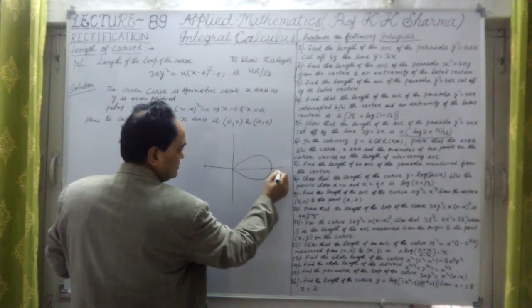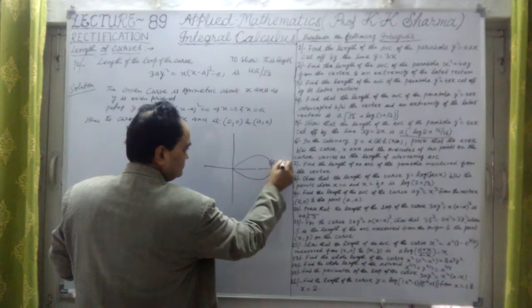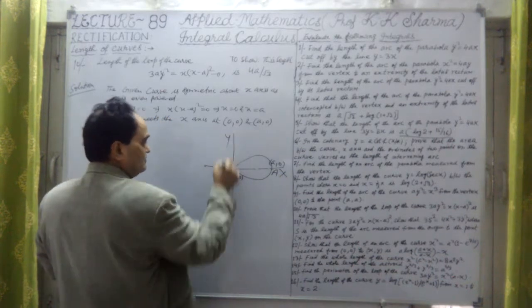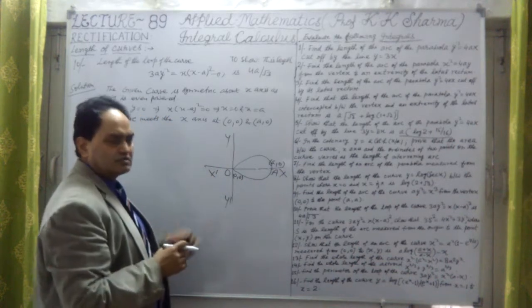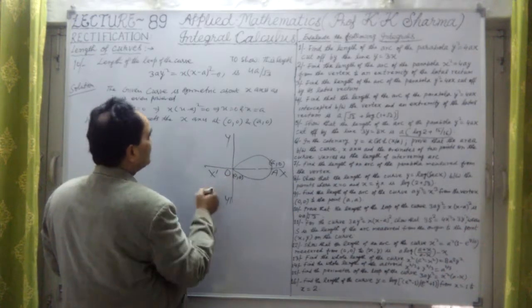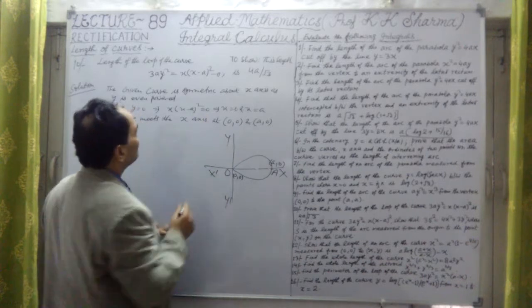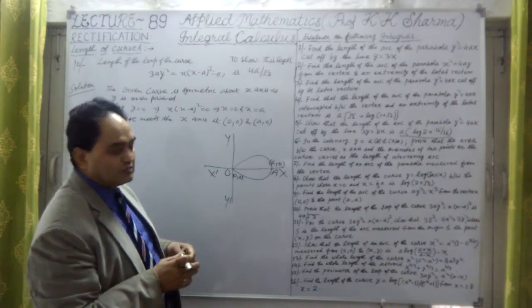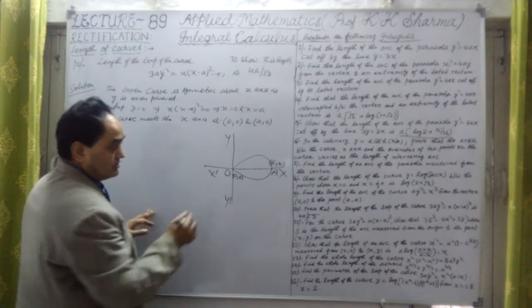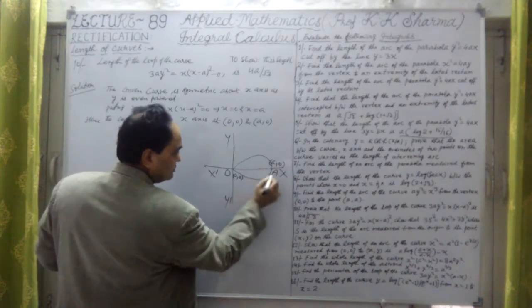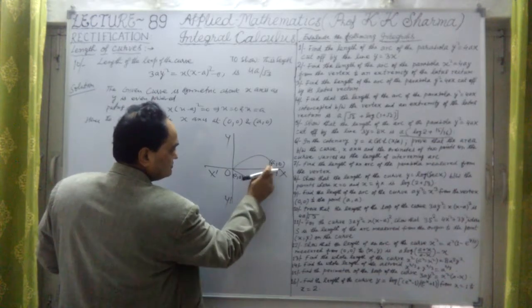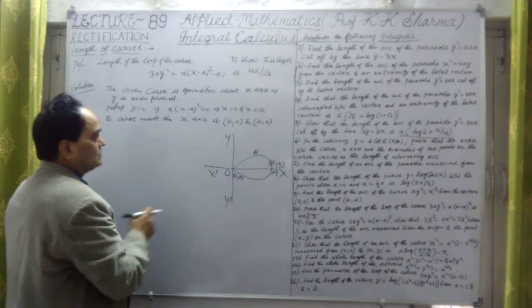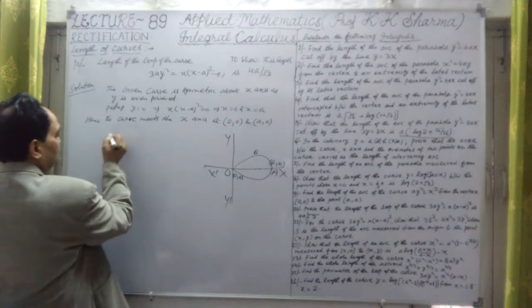The curve passes through the origin and (a,0) on the x-axis, forming a loop. The total length of this loop equals twice the arc length from O to B, since the curve is symmetric. So twice the length OB will give us the total length of the loop.